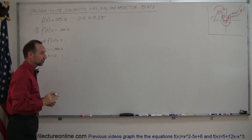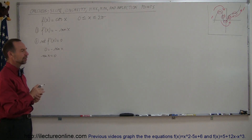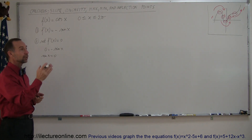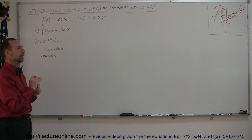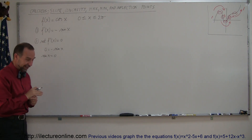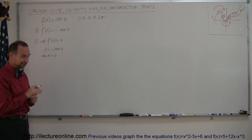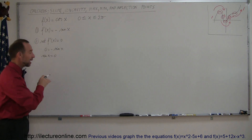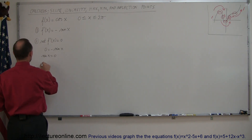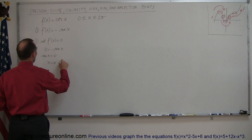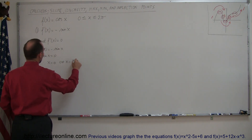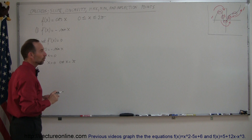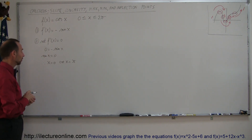Now we ask ourselves: where is sine of x equal to 0? That happens at x equals 0 and at x equals π, which is 180 degrees. So those are the two values of x where the slope is 0.